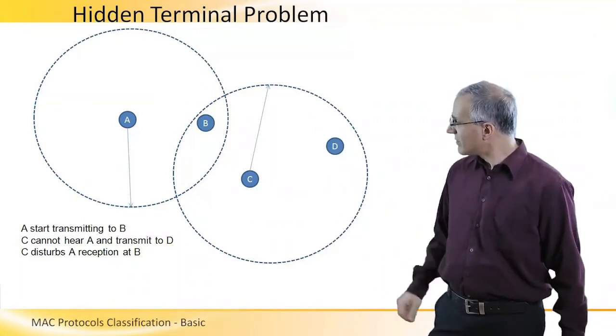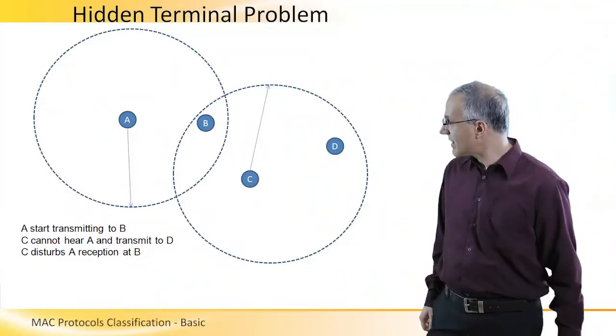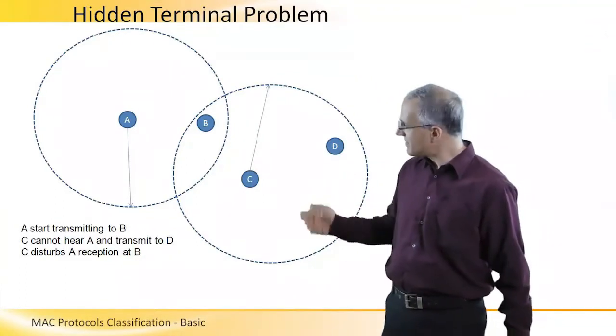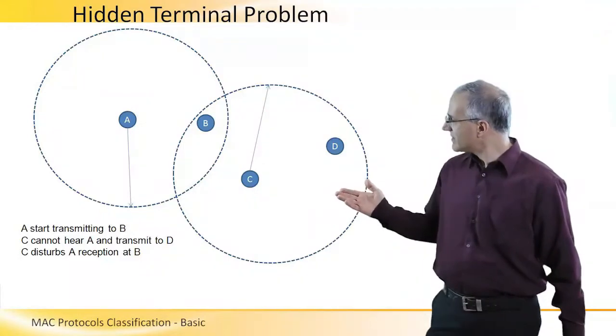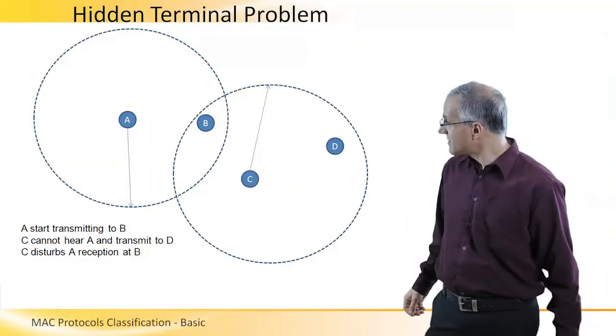And A and C, both A and C want to transmit, and what you see here is their transmission radius. So A wants to transmit to B, and B is within its transmission radius. C wants to transmit to D, and it is also within its transmission radius. So is B.